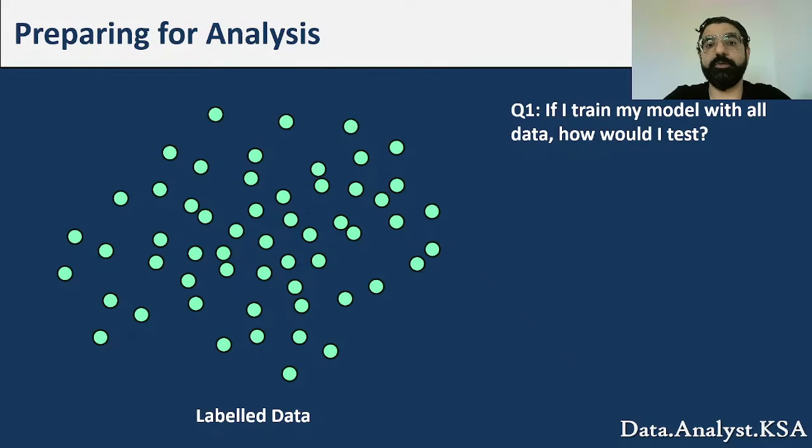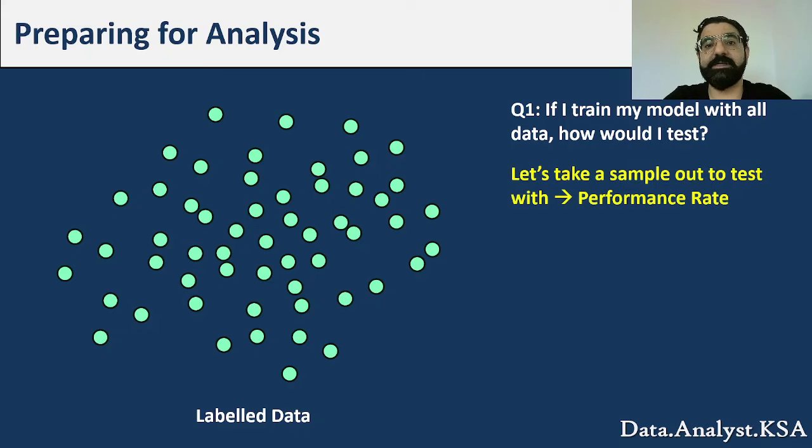The question is: if I train my model with all this data or all these observations, how am I going to be able to test the model? Because I don't have any more labeled data to test the performance metric with. So the logical idea is let me take a small subset out that is also labeled and be able to test my performance metric with it.